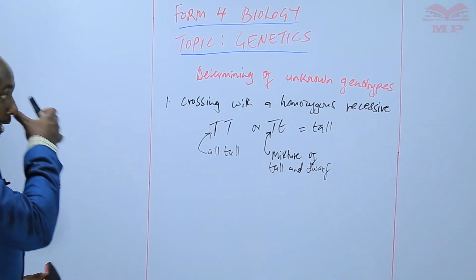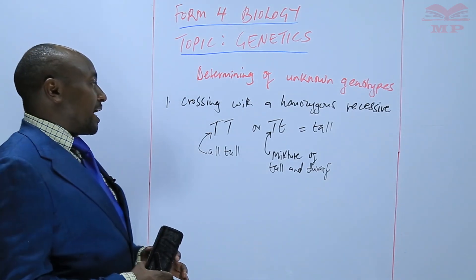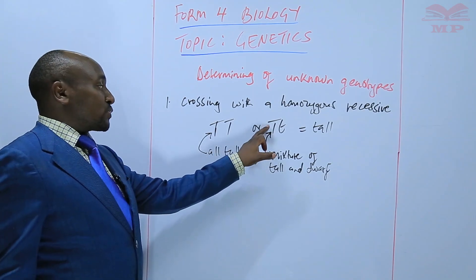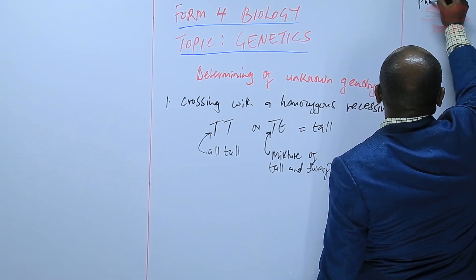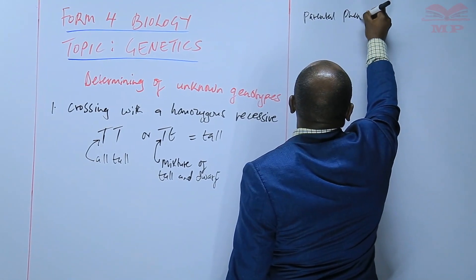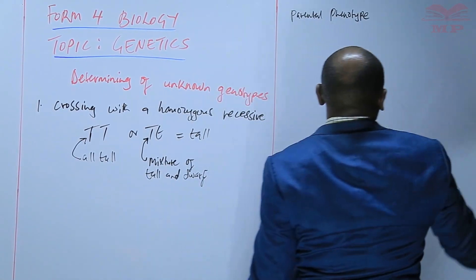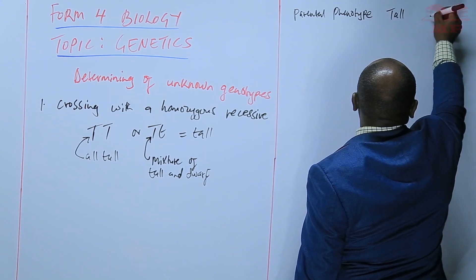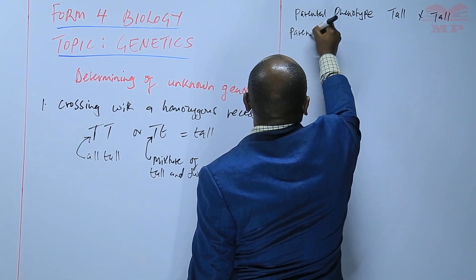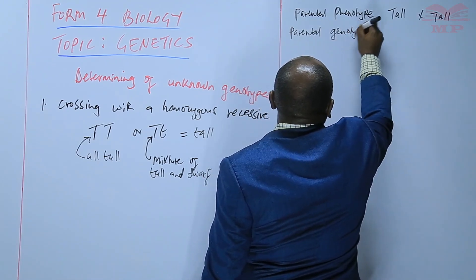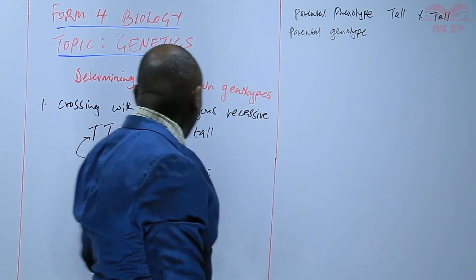Now I would like us to see how we can demonstrate these crosses, assuming both scenarios. For the first scenario, we start with the parental phenotype — we always start with the phenotype before going to the genotype. So the phenotype is tall crossed with tall. Then for the parental genotype, we assume the tallness results from the first case, which is homozygous.